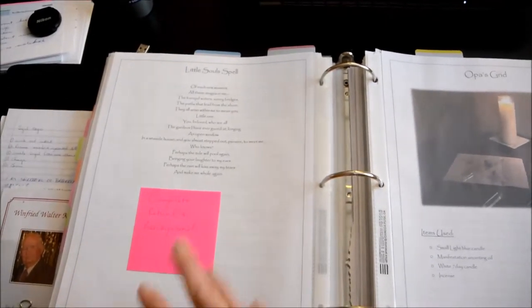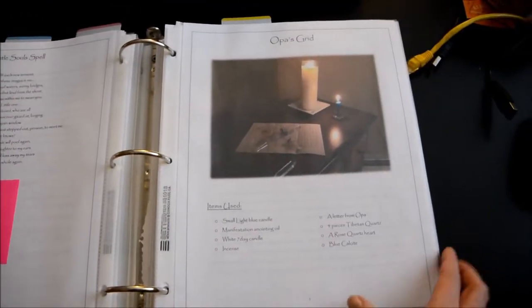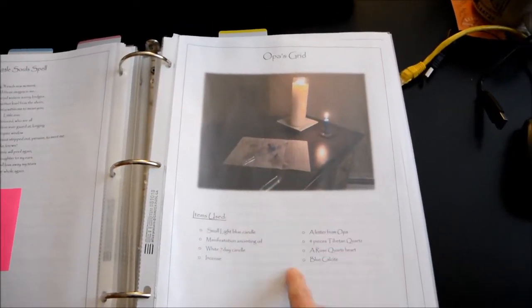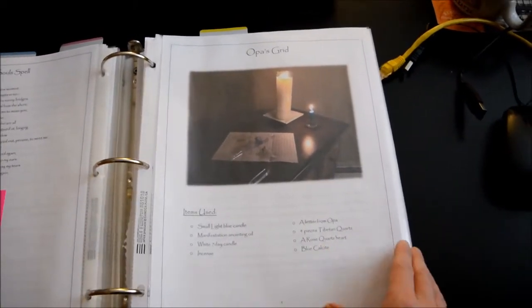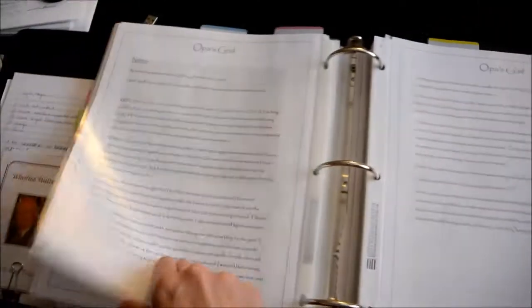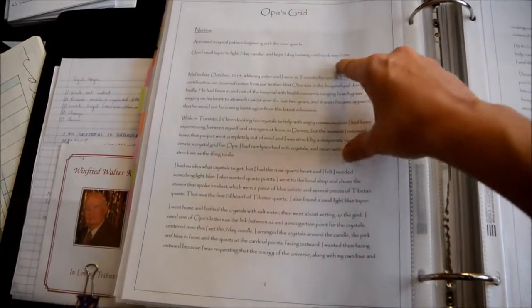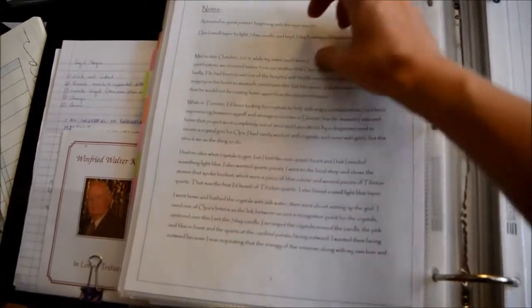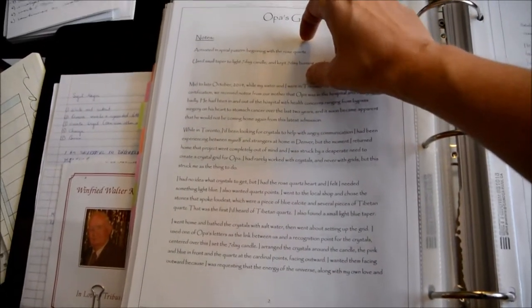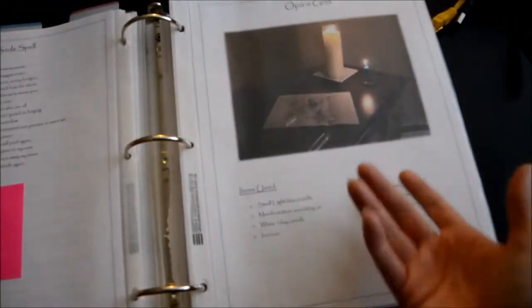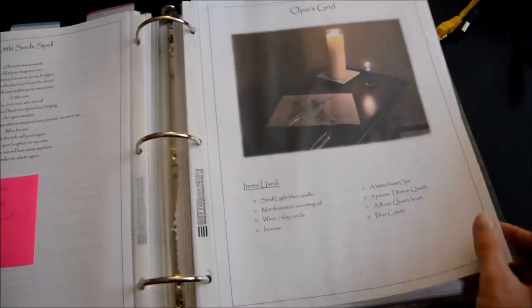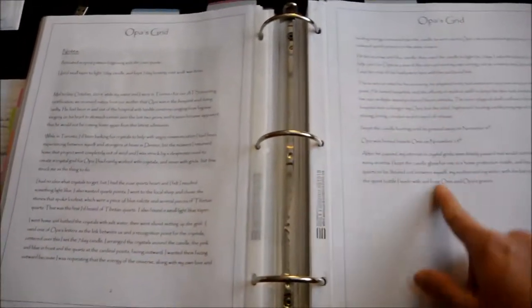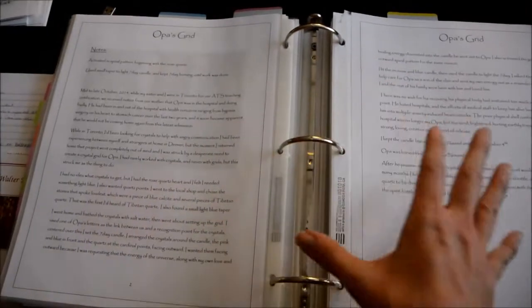Then I have my grandfather's healing grid. I included a picture of the grid that I did and the items used, then a little description of what I did specifically and how I set it up. The notes are just this tiny part - it's fairly self-explanatory. Then I have the background, the story, how this relates to me and why I did it.